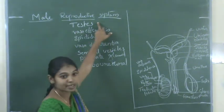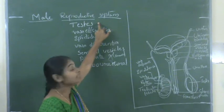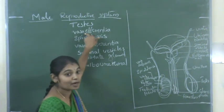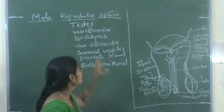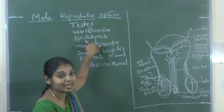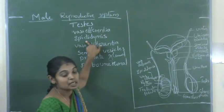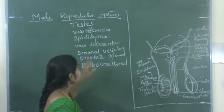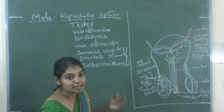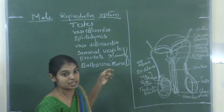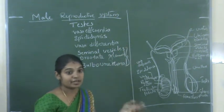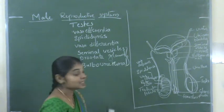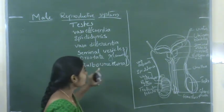A pair of testes are the primary sex organs of male individuals. The testes lead into the vas deferentia. From each testis, a vas deferens duct arises. Then the epididymis — these are paired ducts. The accessory glands of the male reproductive system are: a pair of seminal vesicles, the prostate gland, and the bulbourethral gland.